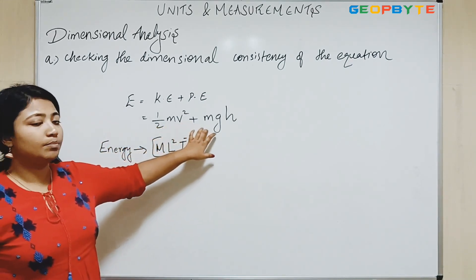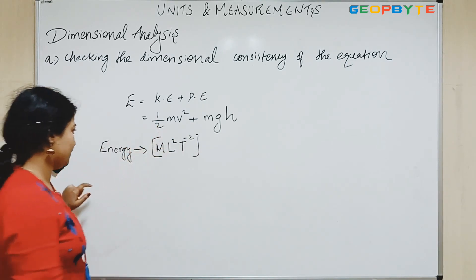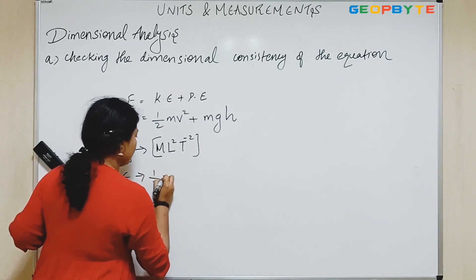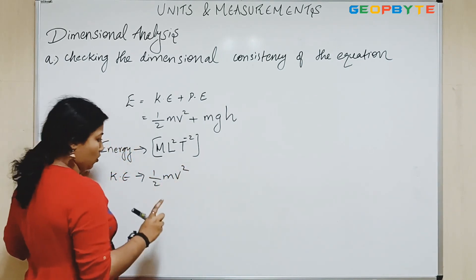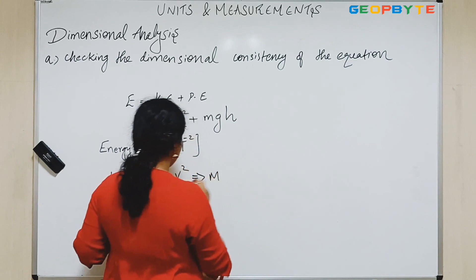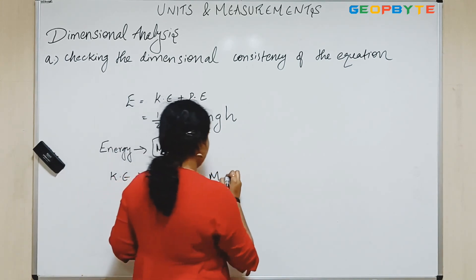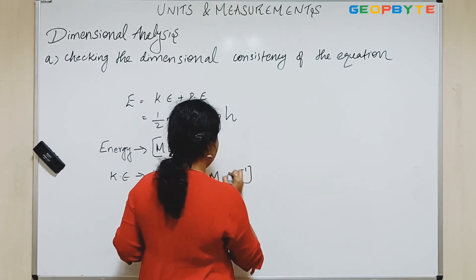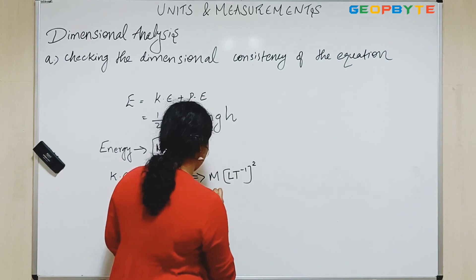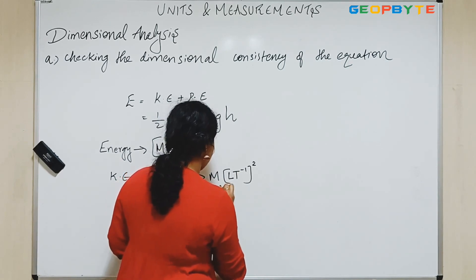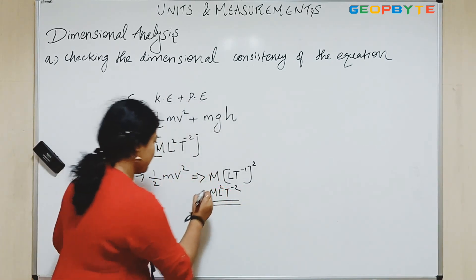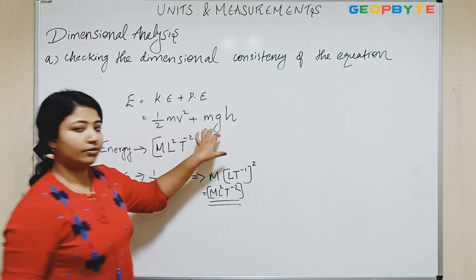Now we will check the kinetic energy and potential energy dimensional equations. Considering kinetic energy: it is half M V squared — don't consider this constant. The dimensional equation is M times velocity squared. We know velocity is L T to the power minus 1, and velocity squared means power 2. So that is equal to M L squared T to the power minus 2. We have got the kinetic energy dimensional equation. Now we will find potential energy, that is M G H.